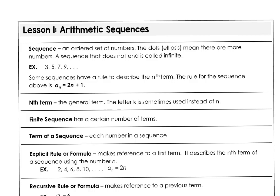This is Lesson 1 in Chapter 9. We're going to look at arithmetic sequences today. A sequence is just an ordered set of numbers, and when you see that ordered set of numbers with the three dots, those three dots are called the ellipsis, which means that the sequence continues. It's called an infinite sequence. Some sequences have a rule that describes the nth term.